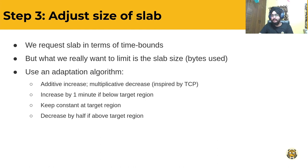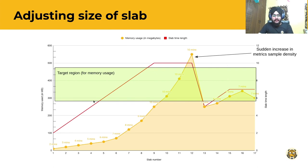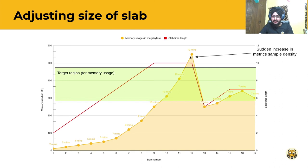Let's understand this better with the graph. We start with slabs from one minute and go with an increasing time range. As we reach the target region, the time range remains constant. And if we exceed the target memory usage region, we do a multiplicative decrease by half — which brings it to five minutes — and then we again aim to be inside the target region.